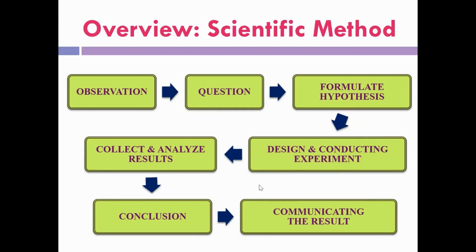There are two types of systematic processes: discovery-based science, which uses inductive reasoning logic, and hypothesis-based science, which uses deductive reasoning logic. You also learned about the scientific method, which is a series of steps used to investigate.